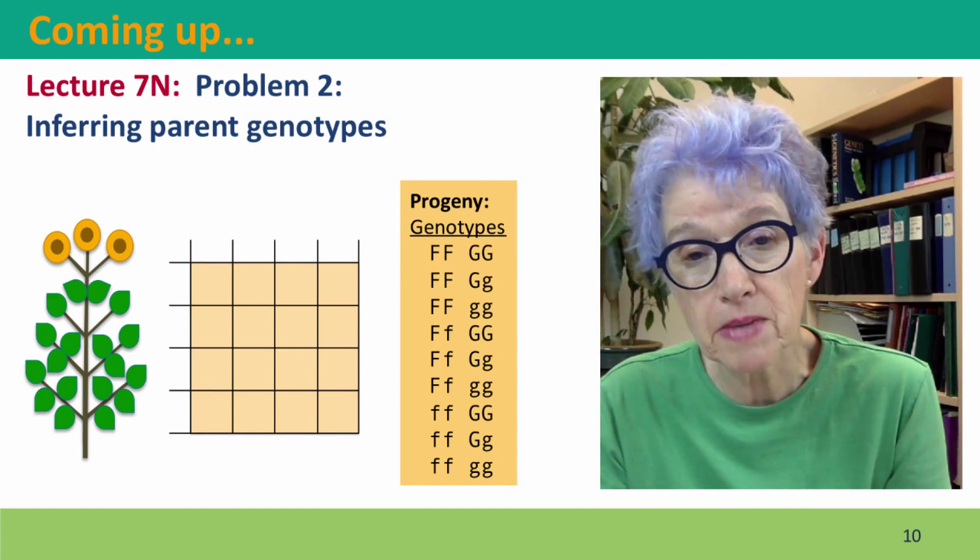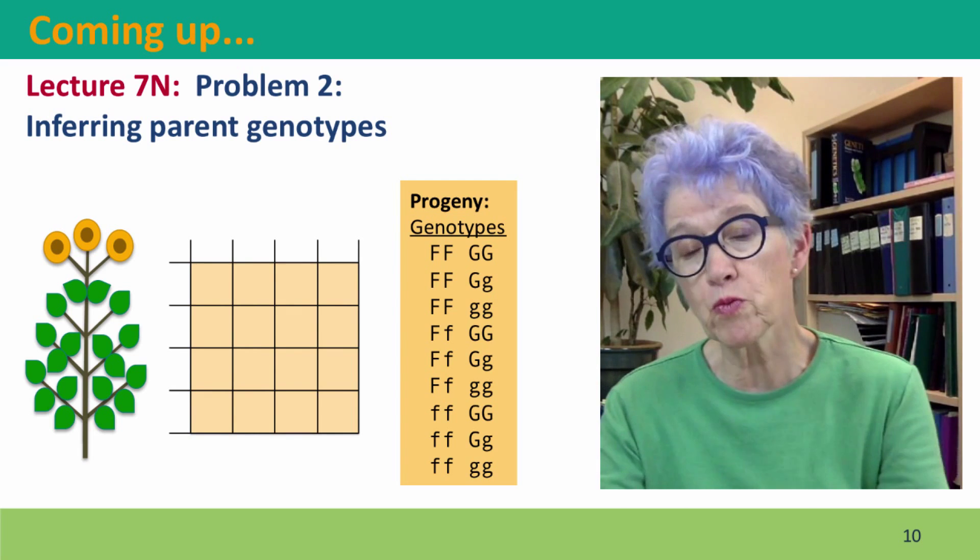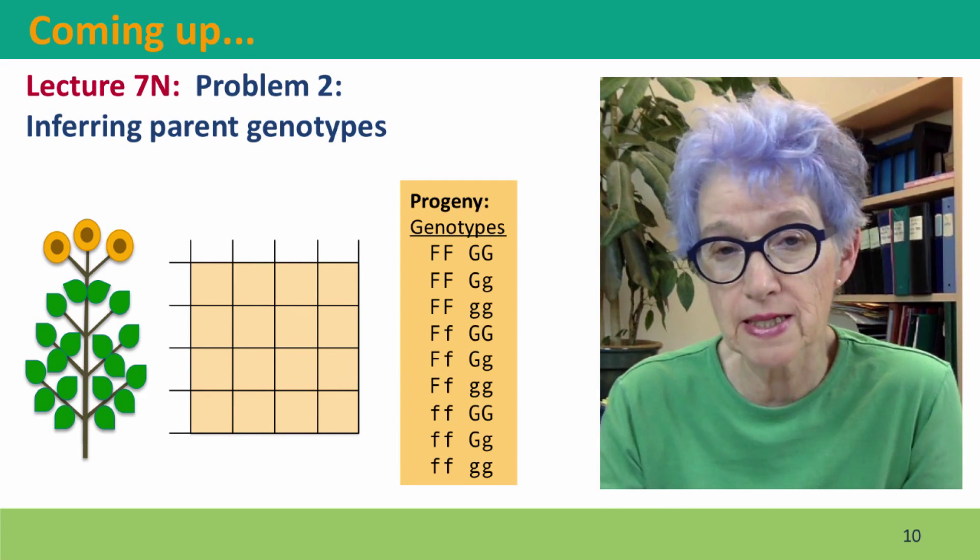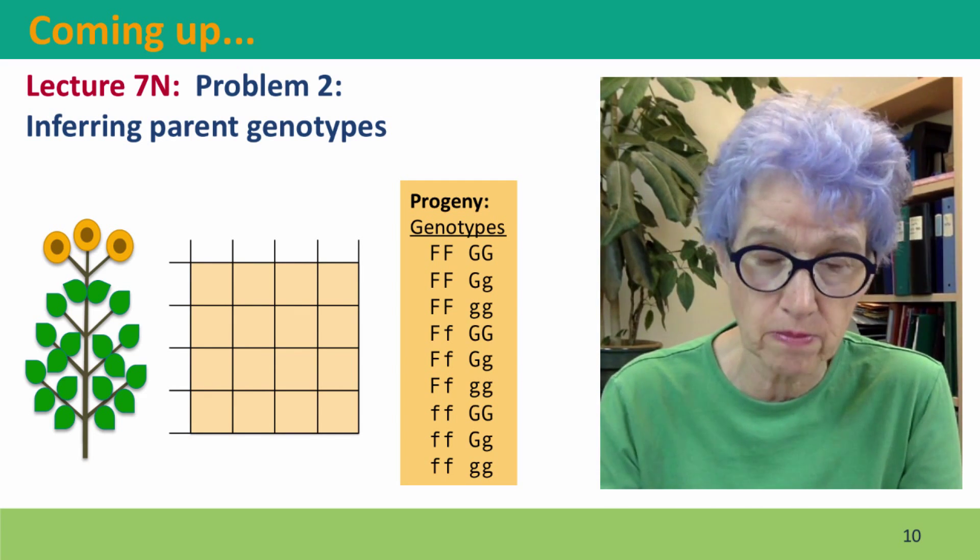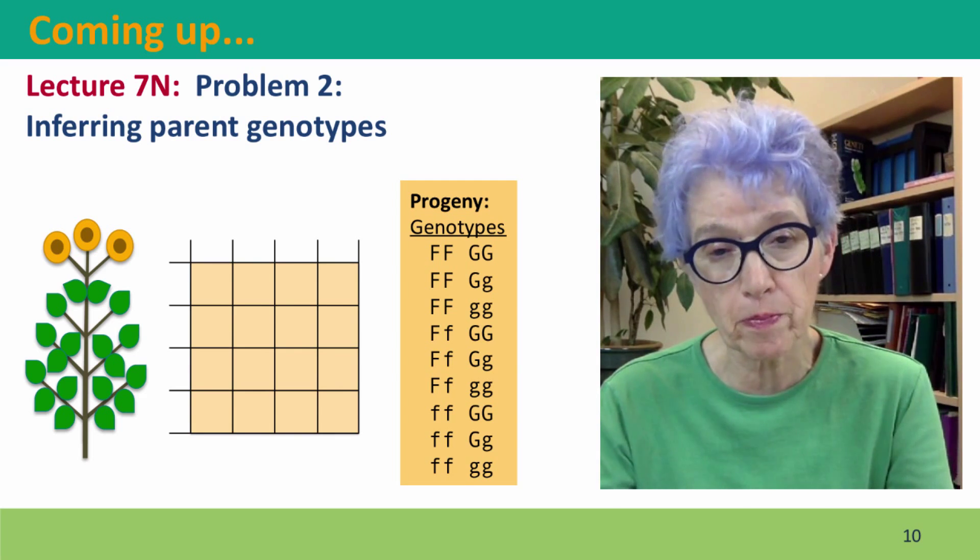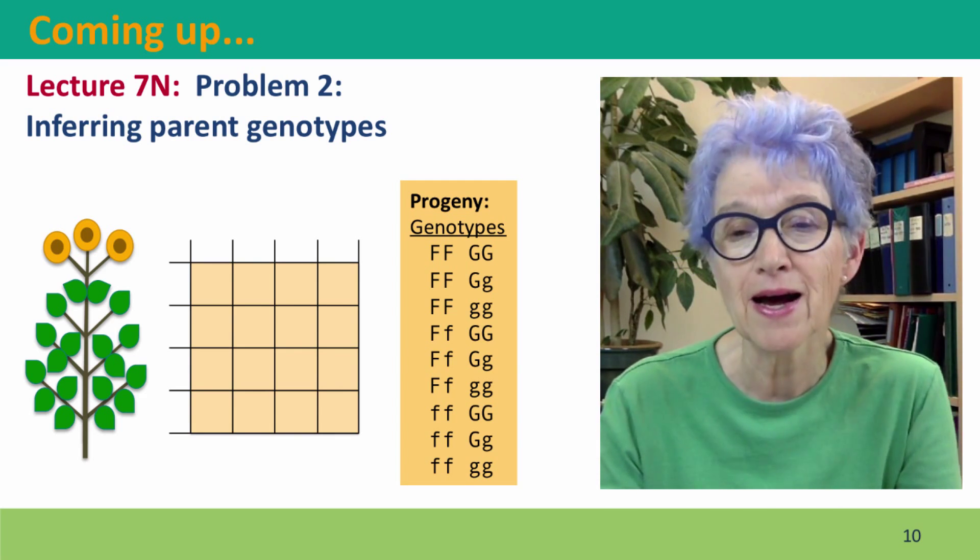So coming up next is the second of our problem. In this problem we're going to work backwards. We're going to take offspring genotypes and we're going to infer what the parent genotype must have been. I hope to see you there.